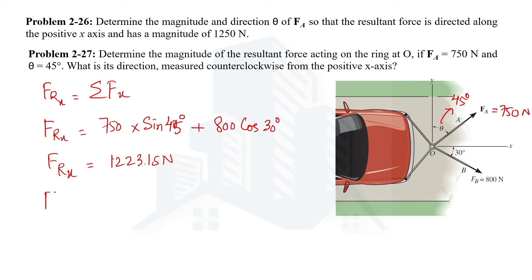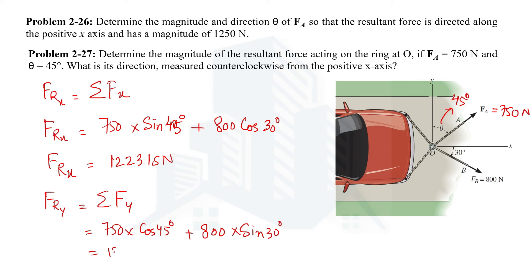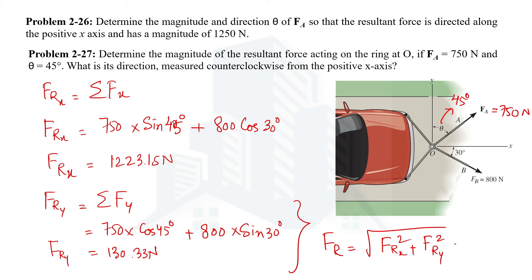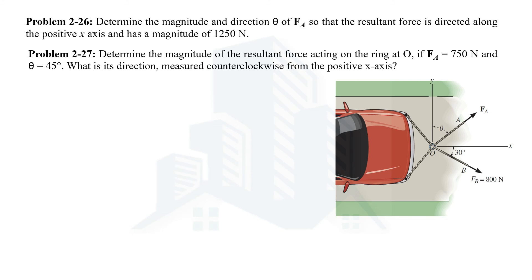Similarly, the y-component of the resultant force equals the summation of y-components of all forces. The y-component of FA is 750·cos(45°), and the y-component of the 800 N force is 800·sin(30°). On simplifying, the y-component FRy = 130.33 newtons. Once we have both components, the magnitude of the resultant force is calculated using the Pythagorean formula — putting in FRx and FRy — giving a resultant magnitude of 1230 newtons.